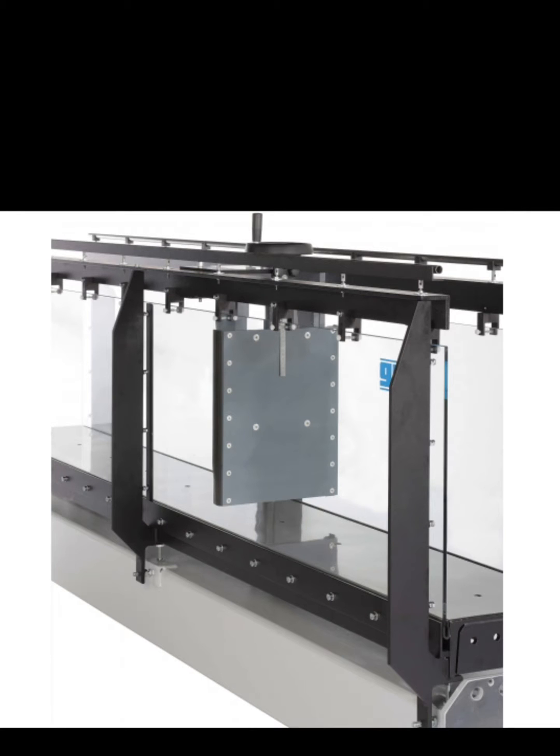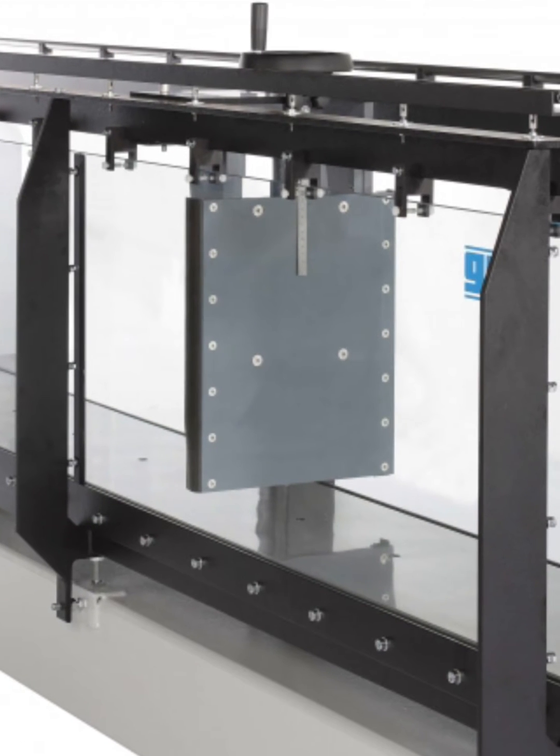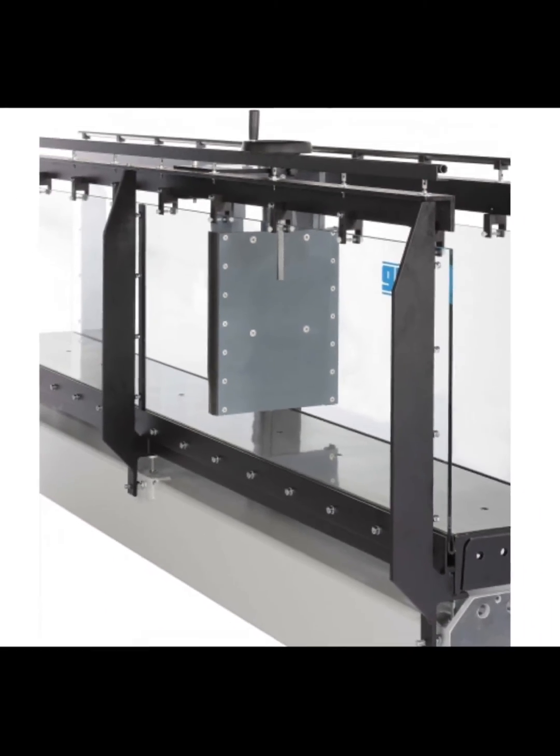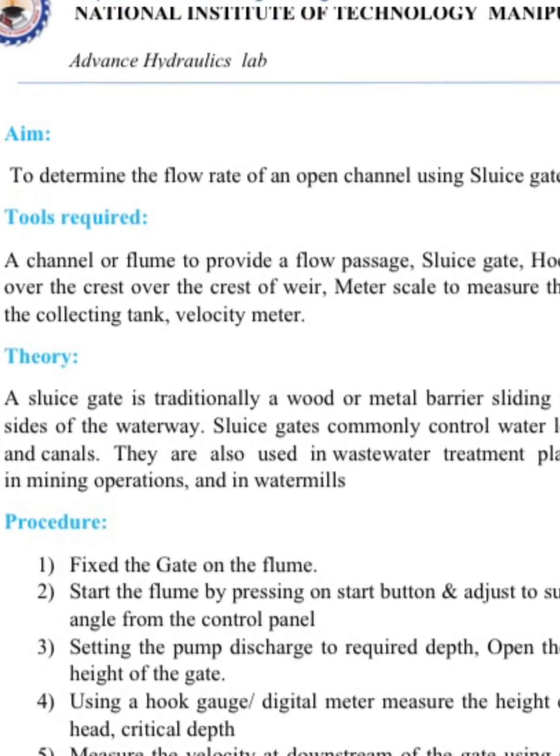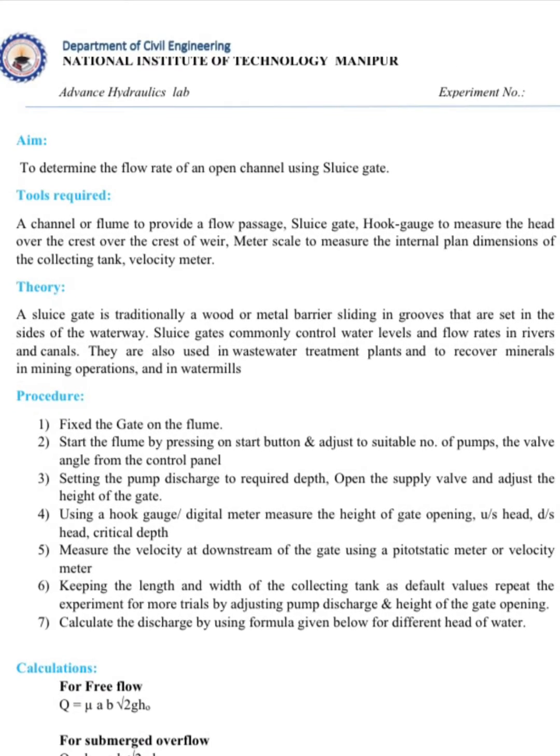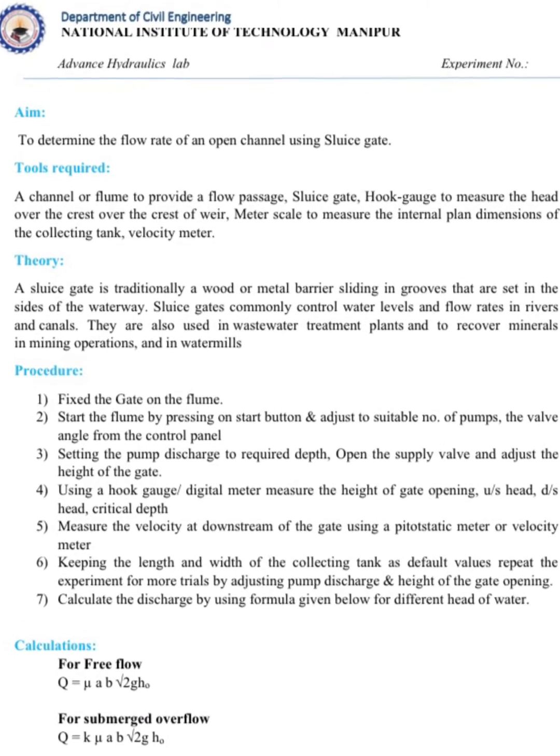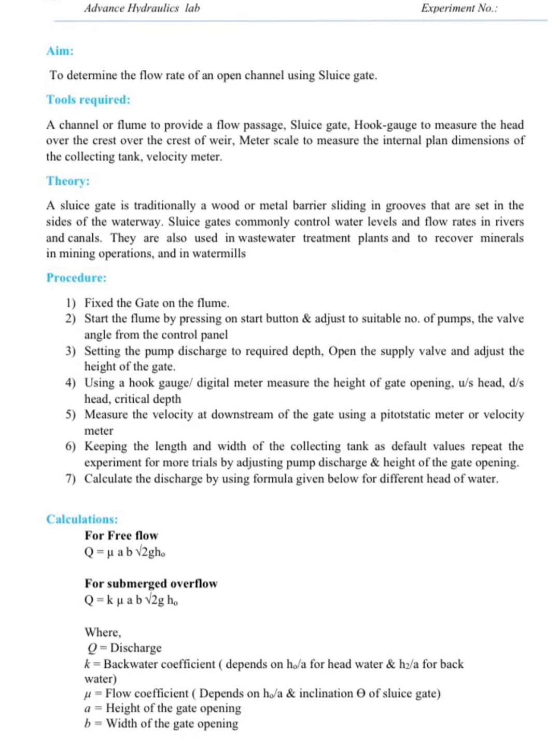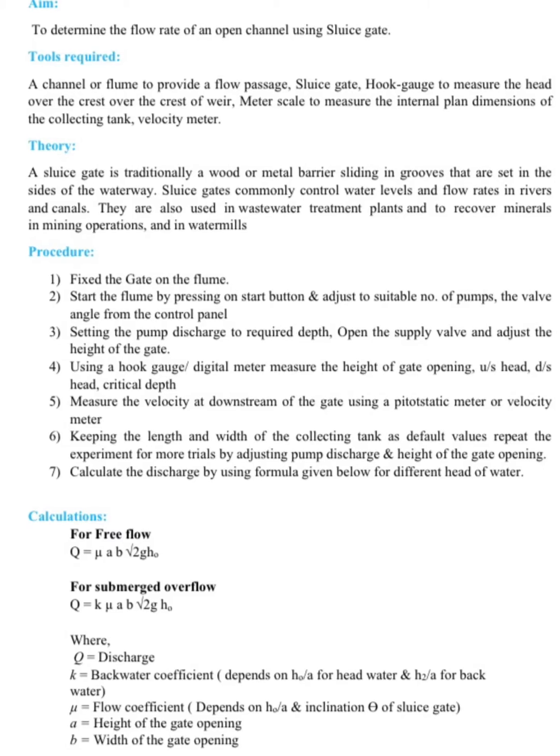This device is called a sluice gate and is commonly used for controlling the flow rate. The tools required are the sluice gate, a digital level gauge, a velocity meter, and the open channel flume. These are the procedures for conducting the experiment.